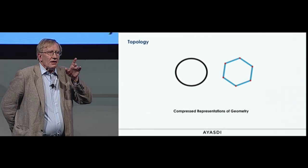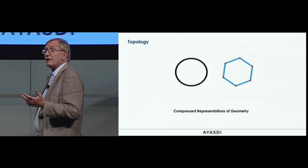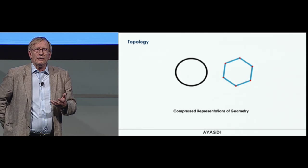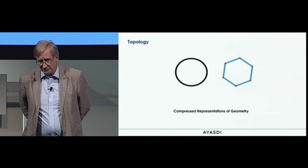Finally, compressed representations of geometry. If you look at the circle, it's infinitely many data points and infinitely many pairwise distances. But if we're willing to sacrifice a little bit of detail, we can get the rough structure in a much simpler compressed form. Looking at the hexagon on the right, it's represented by six nodes and six edges, which can be put inside a single byte.